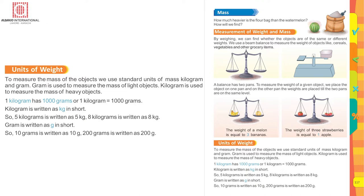Kilogram is written as 'kg' in short, so 5 kilograms is written as 5 kg, and 8 kilograms is written as 8 kg. Gram is written as 'g' in short, so 10 grams is written as 10 g, and 200 grams is written as 200 g.